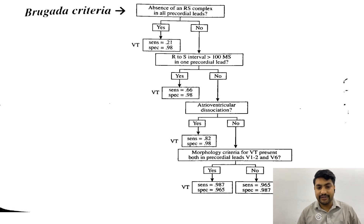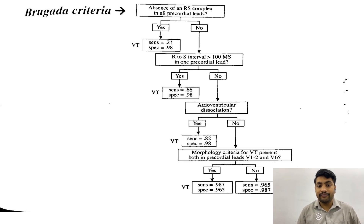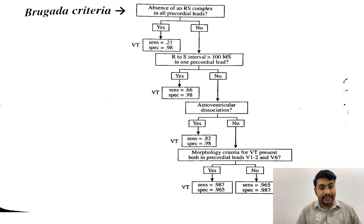Our next step is that the R to S interval should be more than 100 milliseconds. What is 100 milliseconds? It is equal to 2.5 small blocks, because one small block equals 0.04 seconds or 40 milliseconds. The distance from the origin of the R wave to the peak of the S wave — also called the needle of the S wave — should be less than 100 milliseconds. If it is more than 100 milliseconds, it is VT.